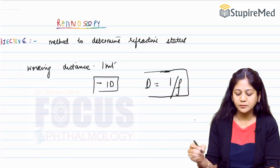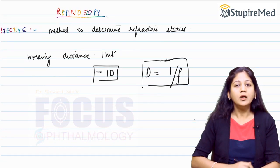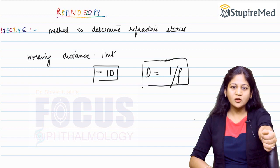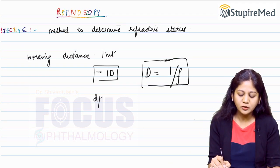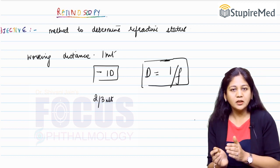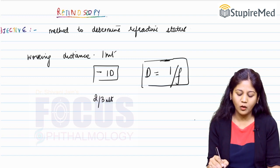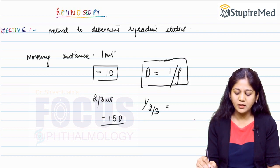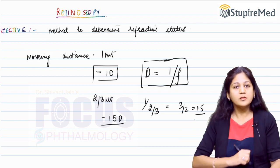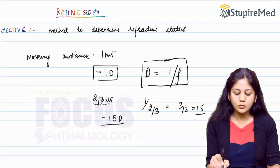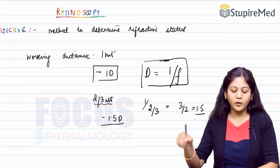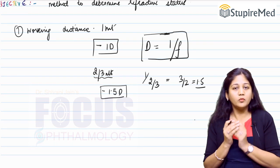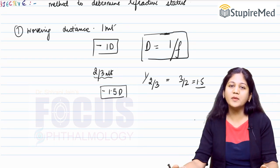Most of us are comfortable doing retinoscopy at arm's length. A short arm gives a working distance of approximately two-thirds of a meter. At two-thirds of a meter, we have to make a correction of minus 1.5 diopters, because the reciprocal of 2/3 is 3/2, which equals 1.5. So whether using one meter or two-thirds of a meter as working distance, we must make the appropriate correction from the retinoscopic finding.